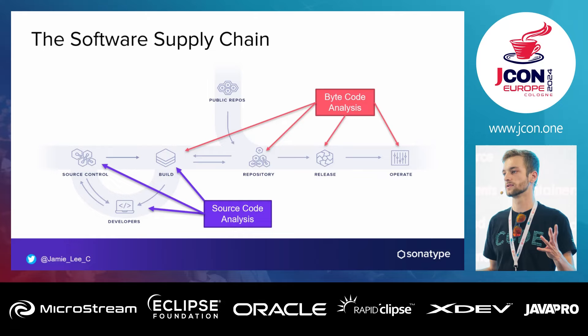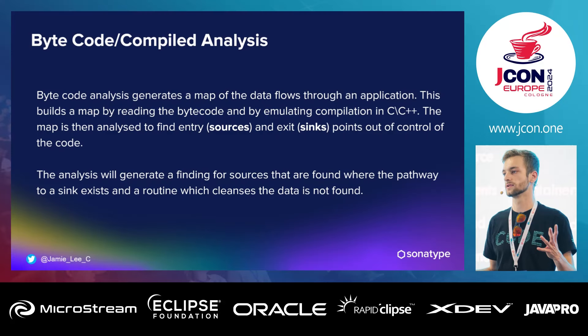The software supply chain is something Sonatype has been talking about for years. You've got your source control, you bring in stuff from public repositories, put them in your internal repository, pull that down to your developer's laptop, do a build, write your code, and it goes back into your repository into release. Source code analysis sits more at the developer's end of this, while bytecode analysis is further down — looking at what's been compiled.